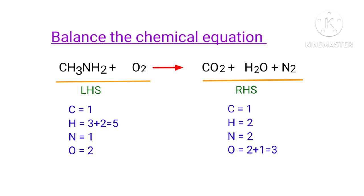In this equation, we need to balance the Nitrogen atoms first. To do this, we need to put a coefficient of two in front of CH3NH2. The Nitrogen atoms are balanced.